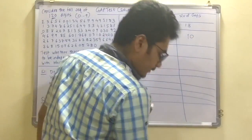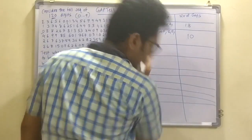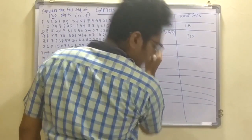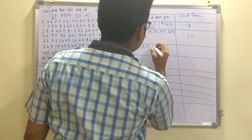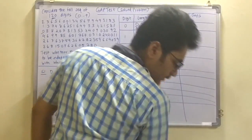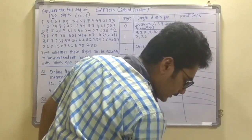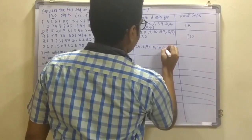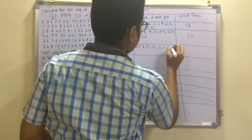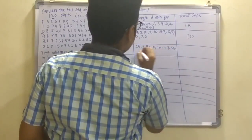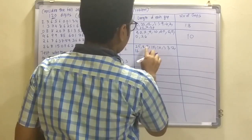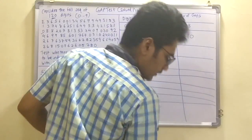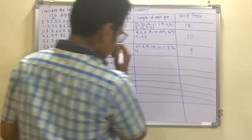For digit 2, the gap lengths are: 25, 8, 7, 15, 16, 1, 3, 12, 17. The total number of gaps for digit 2 is 9.